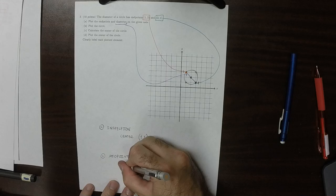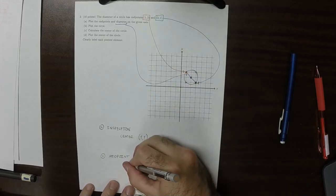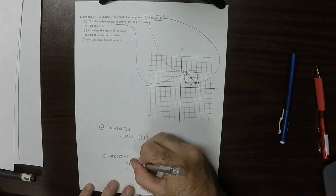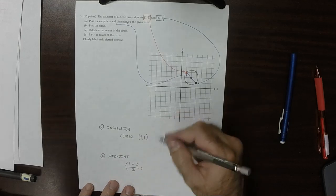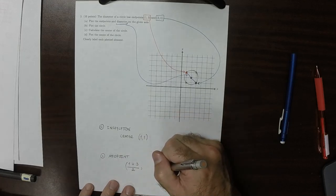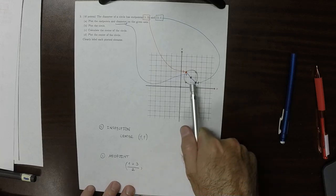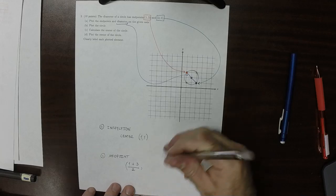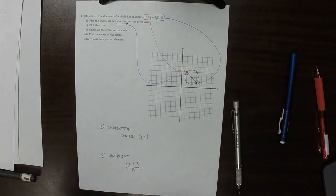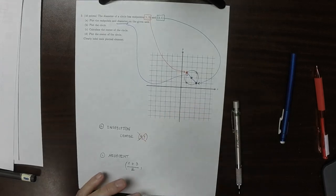the center should be, the x coordinate should be the average of the x's. So 1 plus 3 over 2. And then the y coordinate should be the average. I said you could see it by inspection. It's 1, 1. OK, so no. By inspection... Better inspect a little more carefully. By inspection,